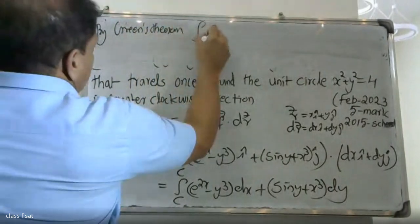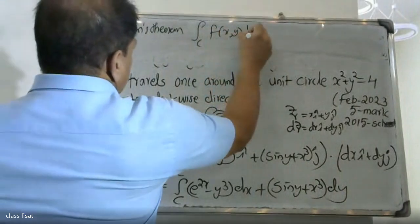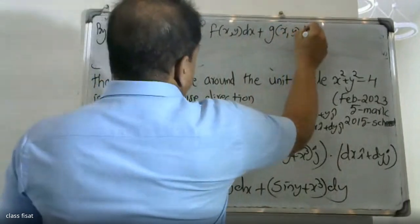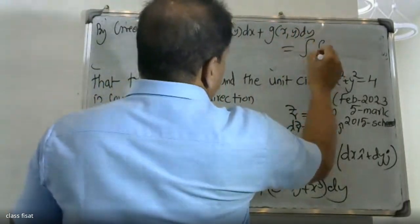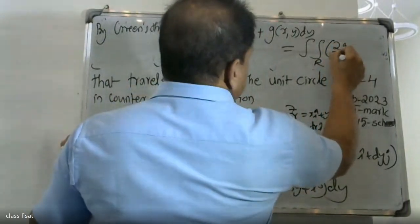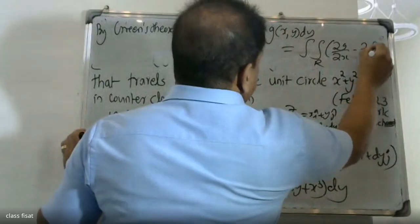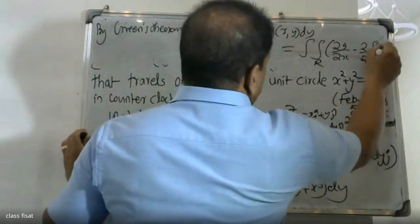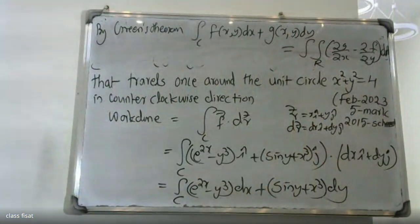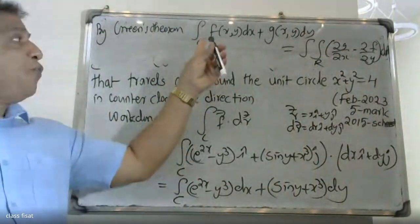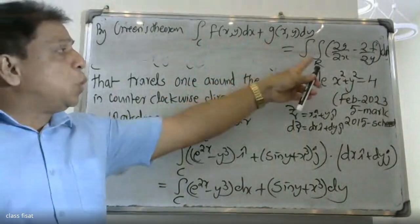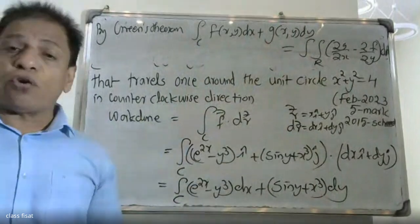By Green's theorem, the integral over C of F(x,y) dx plus G(x,y) dy is equal to the double integral over R of (∂G/∂x minus ∂F/∂y) dA. That is the Green's theorem formula.